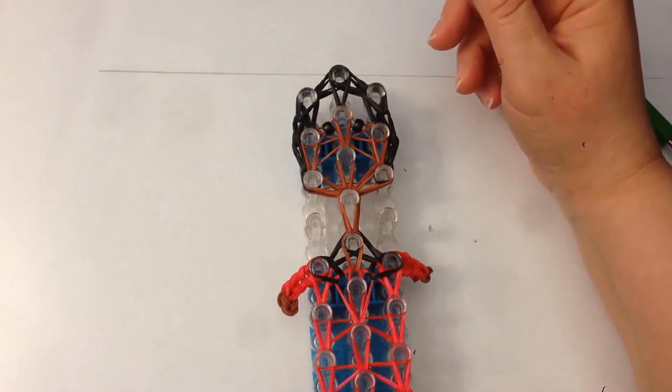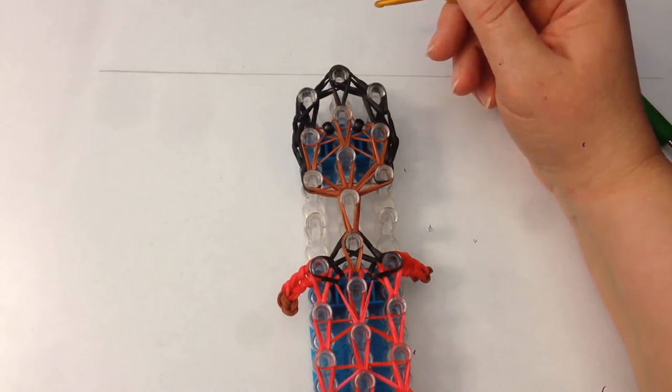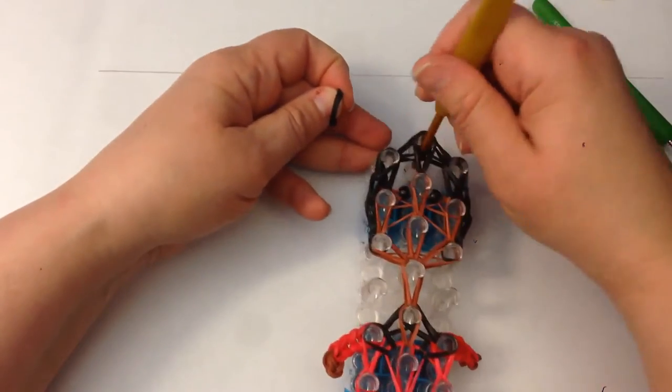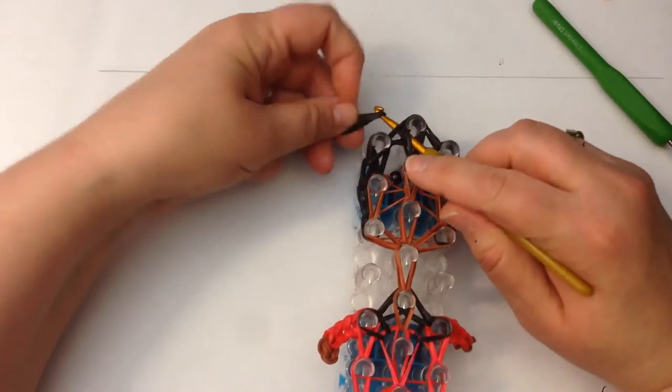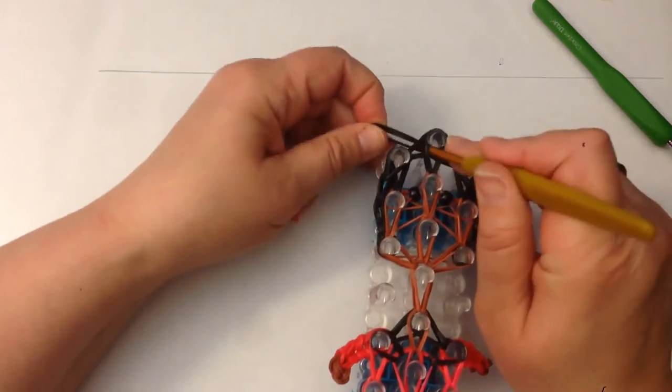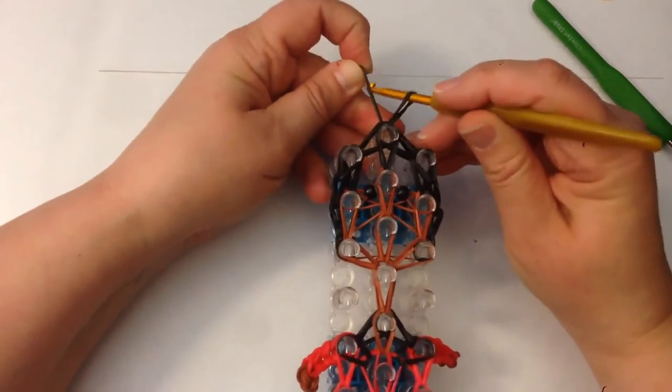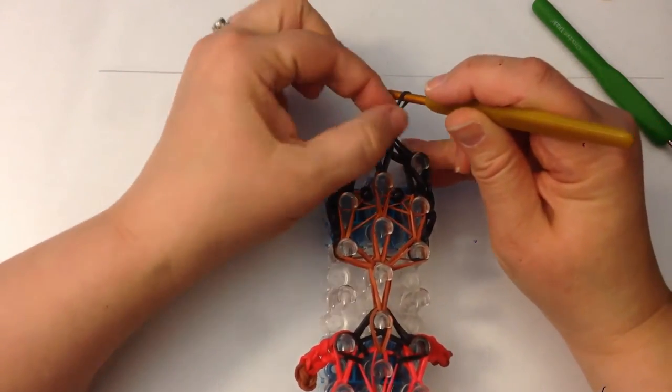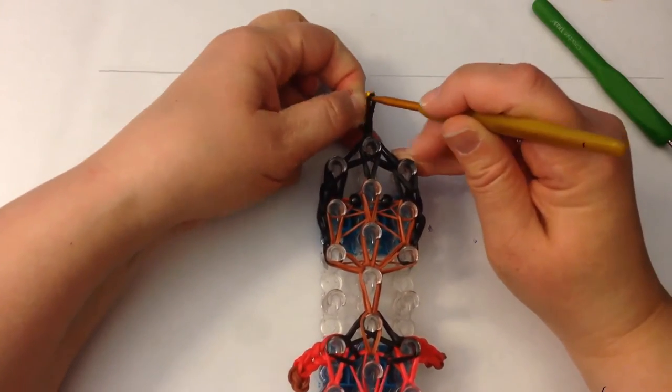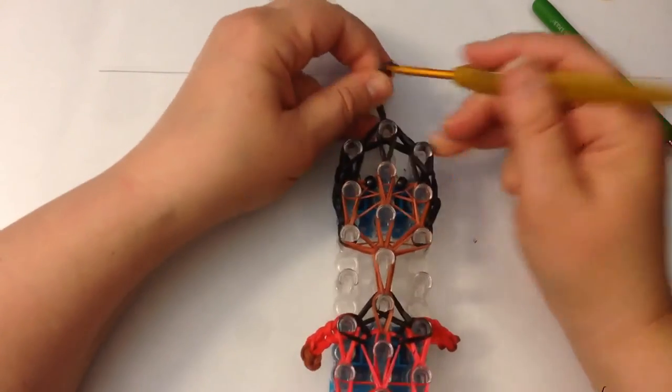Grab two black bands, we're digging down, out the side, getting those two bands and pulling them through the peg and reclaiming on the end here. Take the two closest to you, up, over, and off and pull tight.